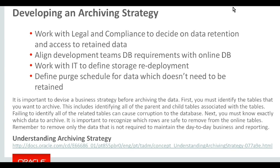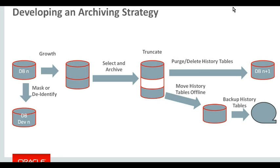I have a paragraph from the PeopleSoft pages that's useful for recognizing things to consider before implementing the strategy. As a simplistic overview: we start with a database which grows over time, implement an archive selection, and the archiving process moves data from the extended production database into the history tables. Those history tables are then moved offline into separate storage, and the purge reduces the size of the database back to something similar to what it was originally.